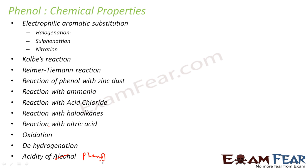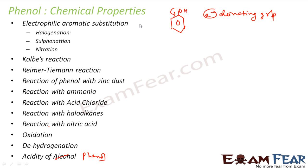Before we start these reactions, let's understand one thing. In phenol, the OH group is an electron-donating group. Since it donates electrons, the whole phenol is more prone to electrophilic substitution reactions. Why electrophilic? Because it has more electrons, generally at the ortho and para positions. If you draw a resonance structure, you'll see that the ortho and para positions have more negative charge. Thus, phenol activates the ring towards electrophilic substitution.